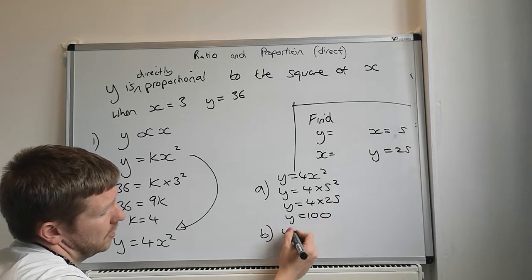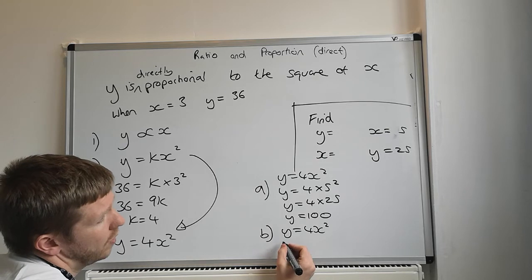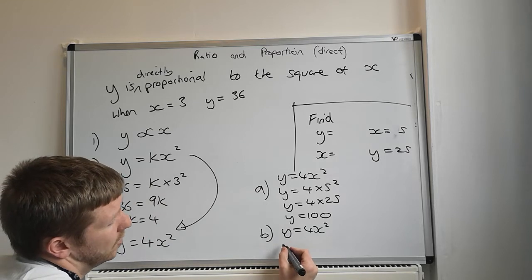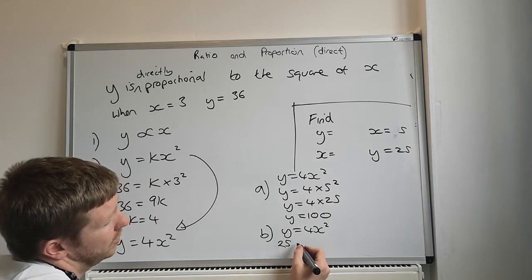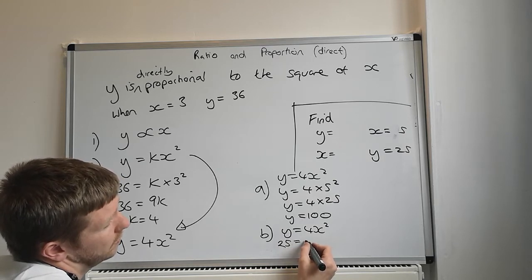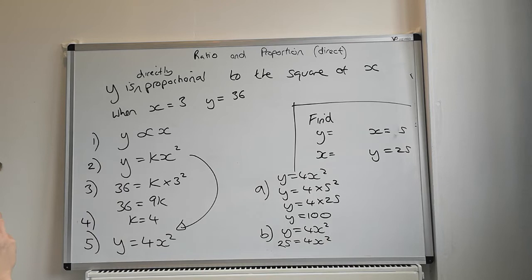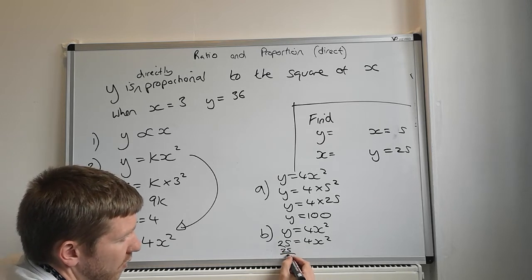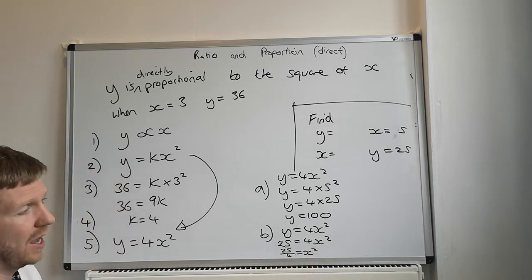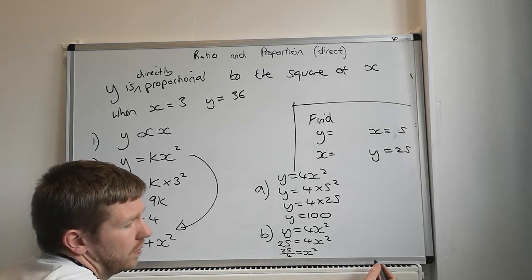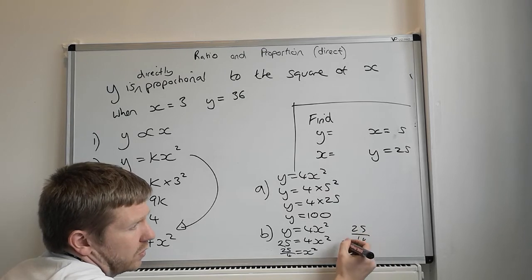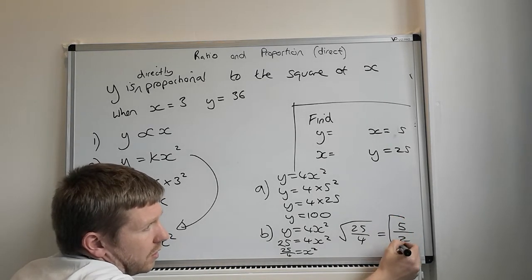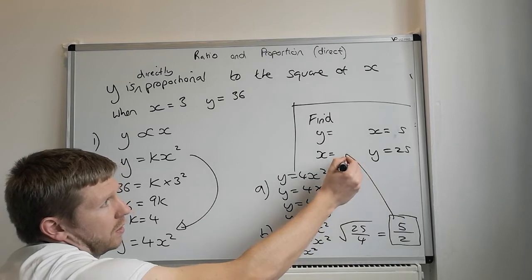Part b, again using your y equals 4x squared. This time they tell you that y is equal to 25. Then y is equal to 25, and then you've got 4x squared. So we don't want 4x squared, divide by 4, so it's 25 over 4 is equal to x squared. And then we need to square root this. Square root 25 over 4, square root 25 is 5, square root of 4 is 2. The answer is 5 over 2, so x is equal to 5 over 2.